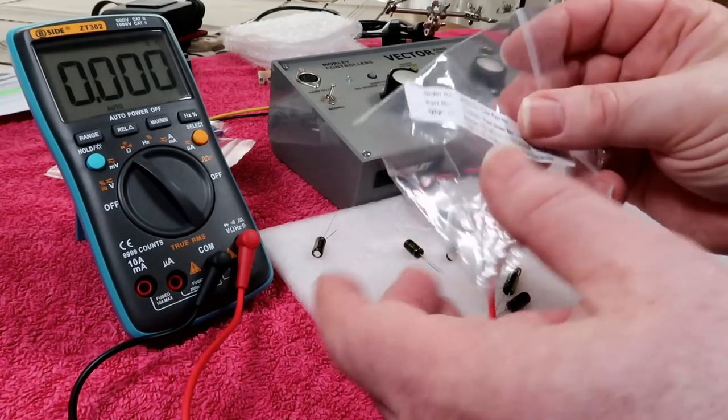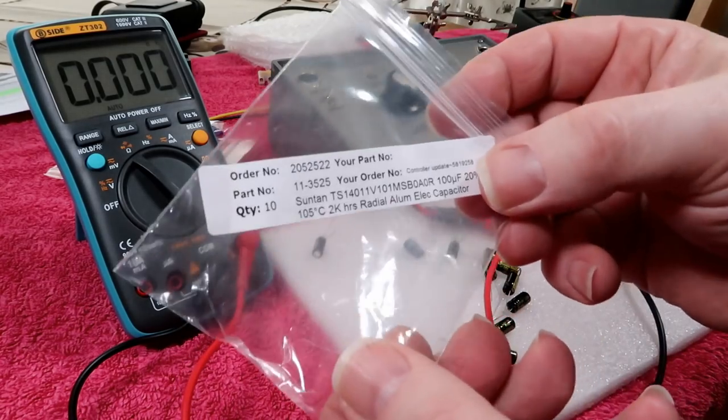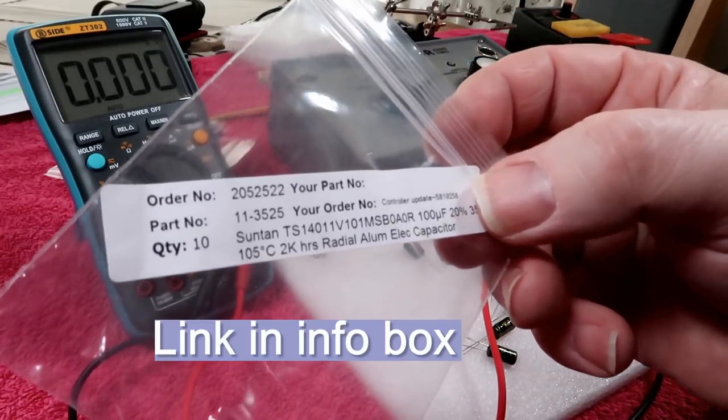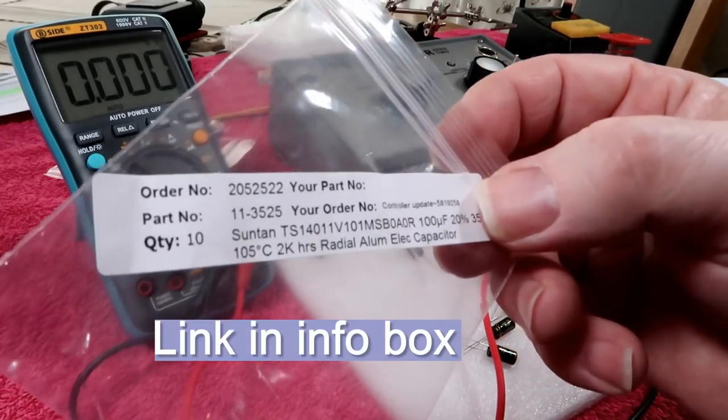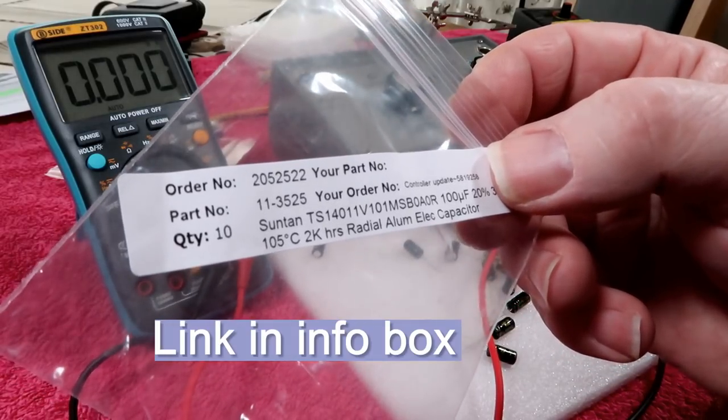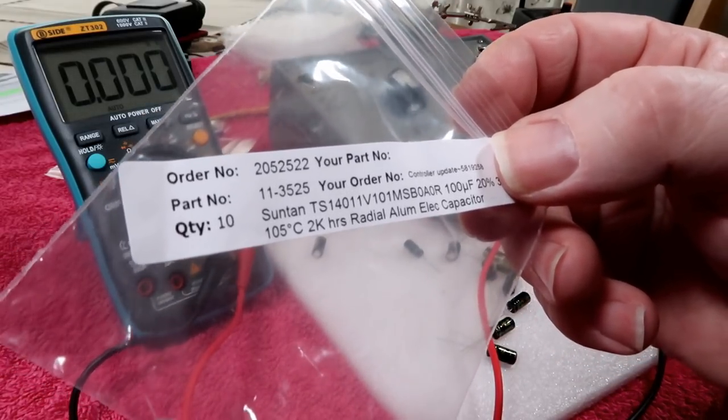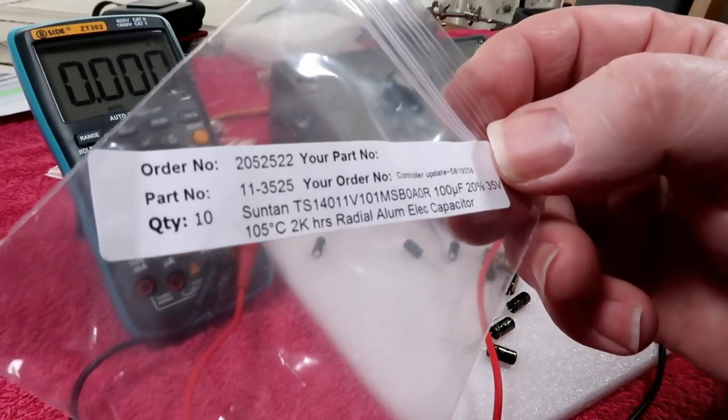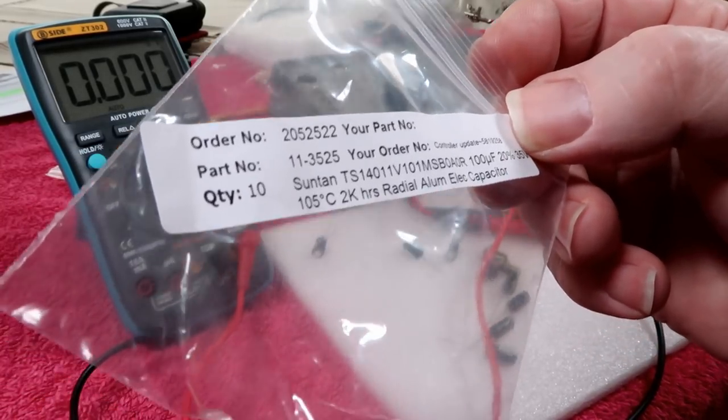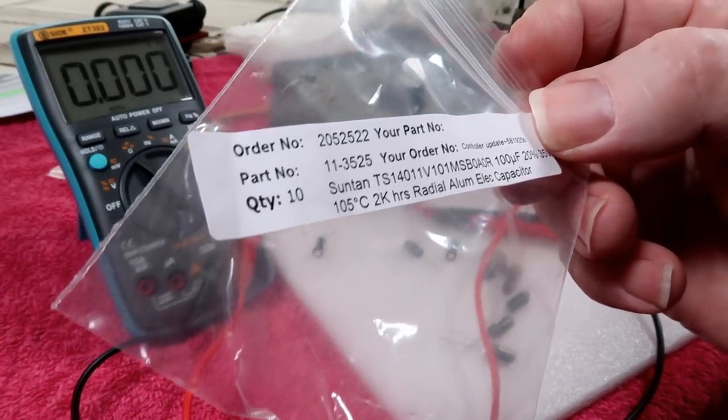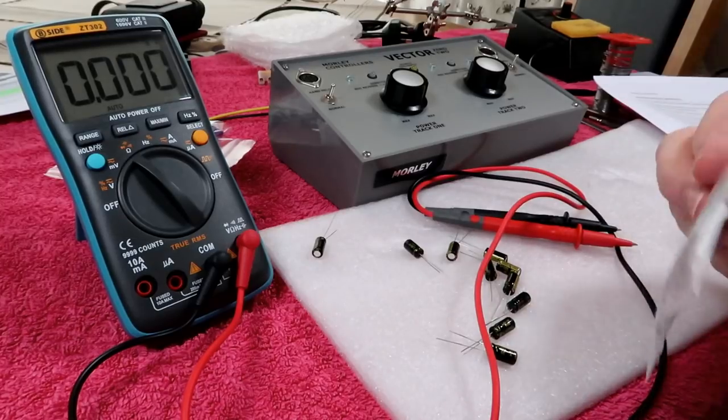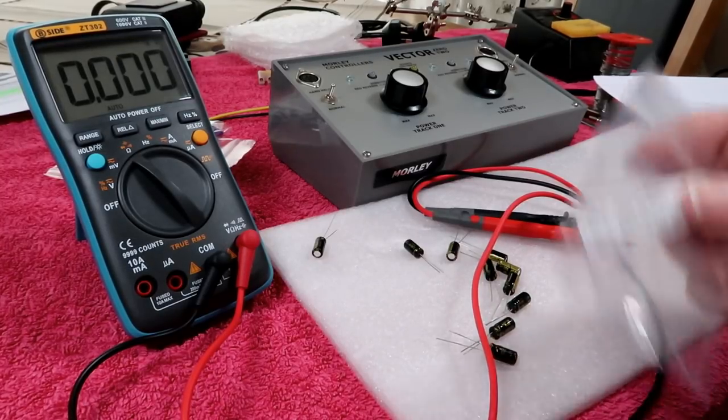So to help you, if you wanted to order these capacitors yourself, they're quite cheap - I think it's about 57p for 10, which I advise you to get so that you can balance them out. They came from Rapid Electronics, and their order number is 11-3525. And as I say, they're 100 microfarad 35 volt rated at 105 centigrade for 2000 hours.